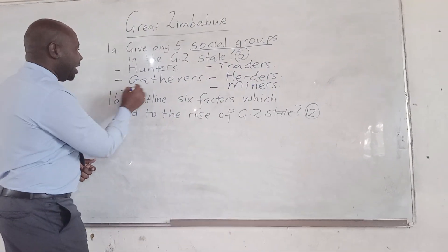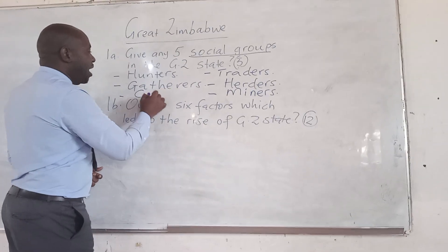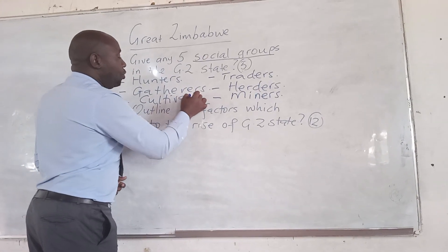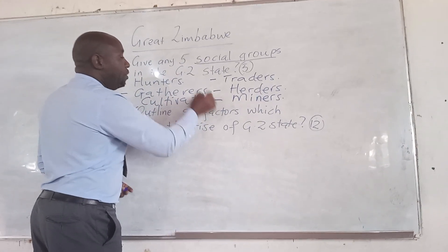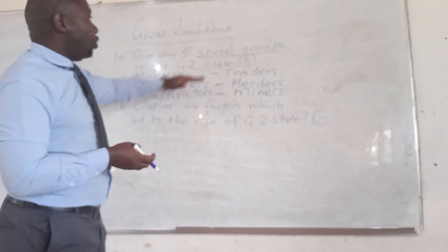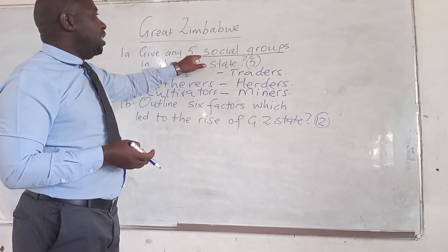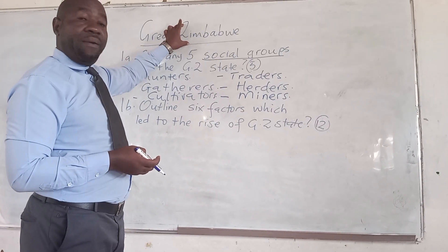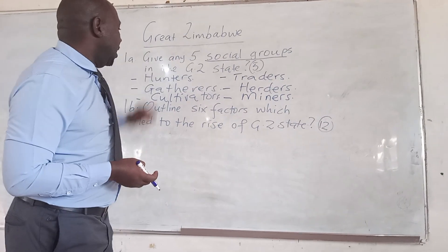You can also add another one — the Cultivators — those who were involved in agriculture. So these are the social groups that we had at Great Zimbabwe.